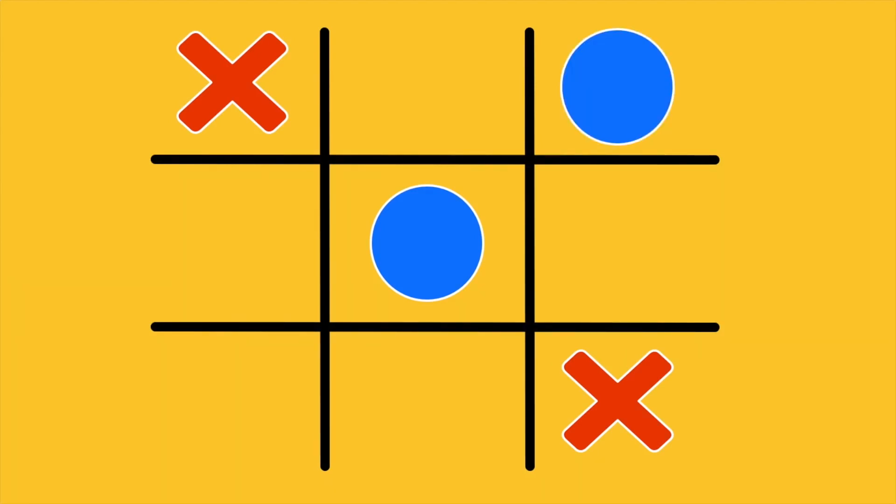If your opponent puts the next 0 in any corner, then you are 100% the winner. Just put a cross in the remaining empty corner, and you again have 2 winning combinations.